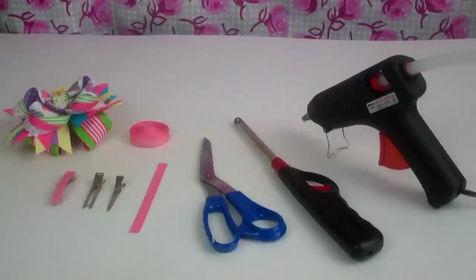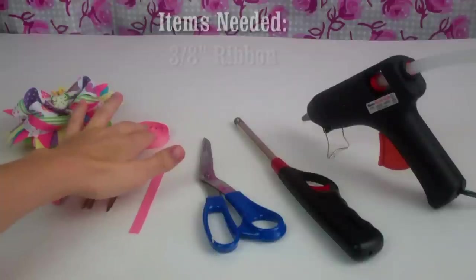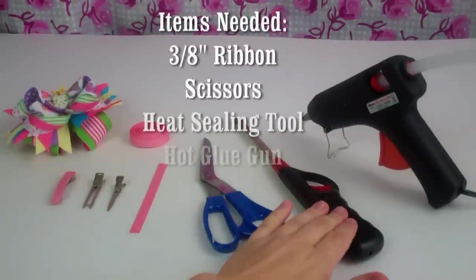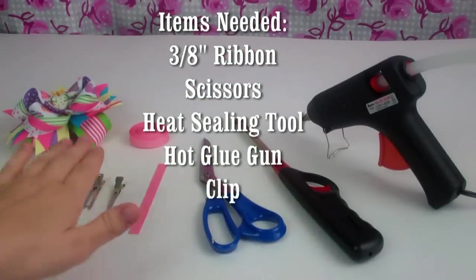I'm going to show you how to line three of the top clips that are used in bows. What you're going to need is a 3 1/8 inch coordinating color ribbon, scissors, a heat sealing tool, a hot glue gun, and of course your clip.